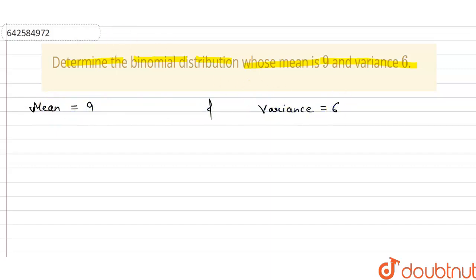6. And we know that the value of mean can be written as n multiply p, that is 9, and this is npq, that is 6. And we know that value of q is 1 minus p, because